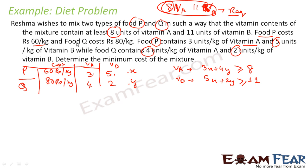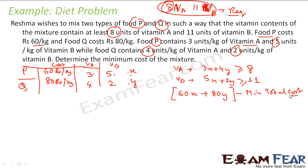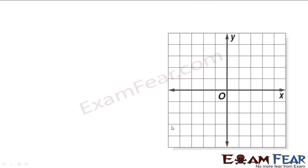The total cost has to be minimized. If x is the kg of P, the total cost of P is 60x and for Q it is 80y, so we minimize Z = 60x + 80y. Also, x and y must be greater than or equal to zero since we can't take negative quantities. So we have four equations in total.